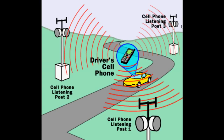As soon as the tower gives access to the cell phone, the Cell ID or tower ID is automatically displayed on that software, showing which tower is giving access to that mobile. Due to this, they come to know which tower and which area the phone is in.